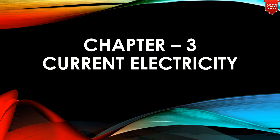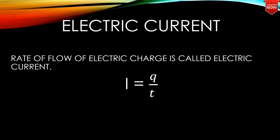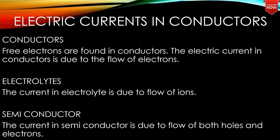In the Plus Two physics, Chapter 3, Current Electricity. The rate of flow of electric charge is called electric current. In a conductor, in cross-section time, the charge Q gives us: I is equal to charge divided by time, that is equal to Q divided by T. The SI unit of current is ampere, denoted A.